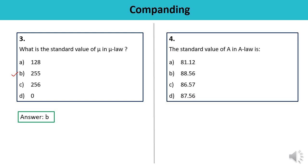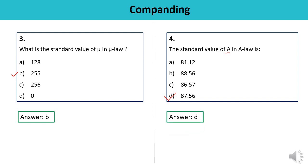Question number four: What is the standard value of A in A law? In A law, the companding compressor characteristic is piecewise — made up of a linear segment for low level inputs and a logarithmic segment for high level inputs. The standard value of A is 87.56, so the answer is D. A law Companding is commonly used for the PCM telephone system — you must remember that.